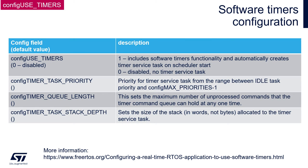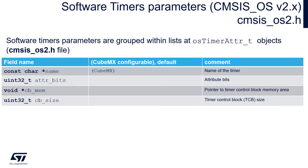Now we will focus on software timers implementation within CMSIS OS version 2. The software timer parameters are stored within a dedicated structure of type osTimerAttr_t, used during the creation process. This structure is defined within the cmsis_os2.h file. During software timer creation — using STM32CubeMX, STM32CubeIDE, or manual coding — we specify only the software timer name. The remaining fields, such as attribute bits, pointer to the timer control block memory area, and timer control block size, are filled automatically by the creation function.